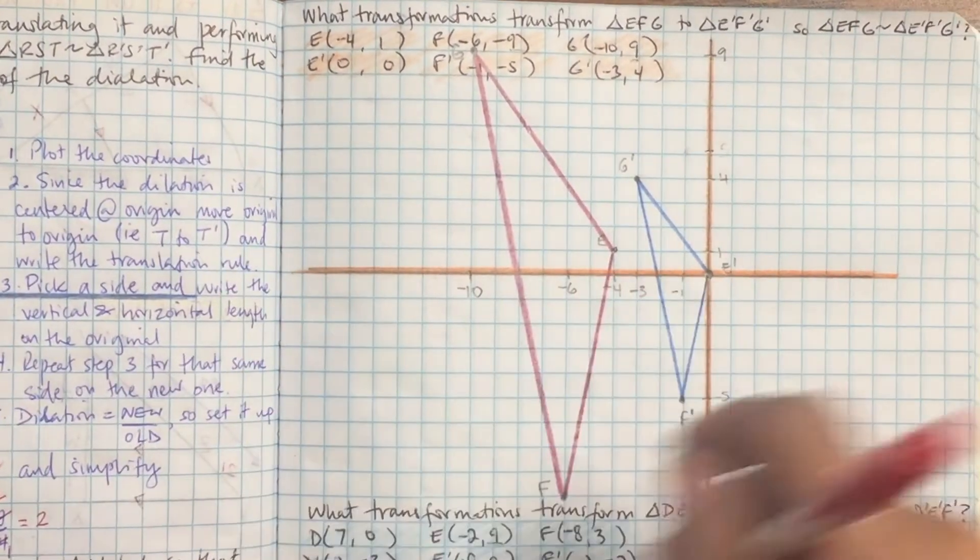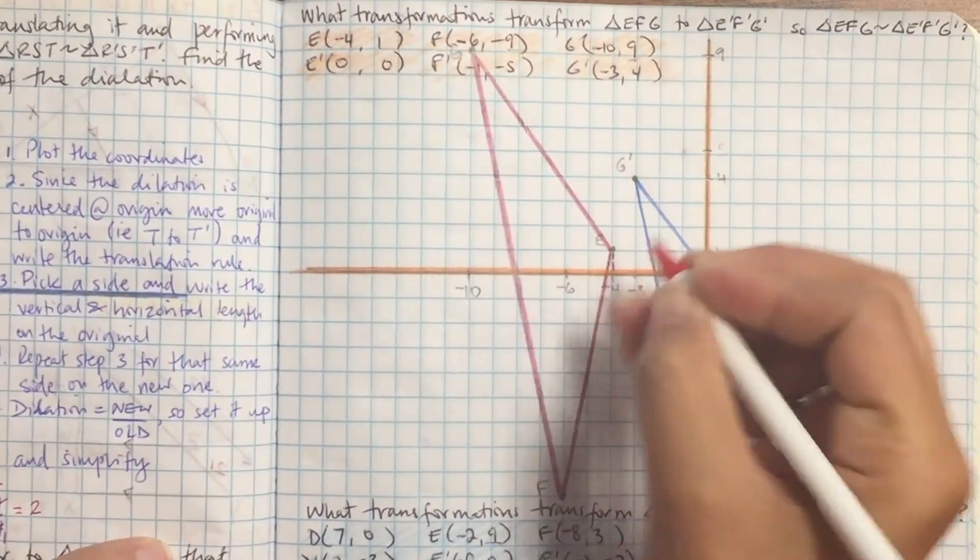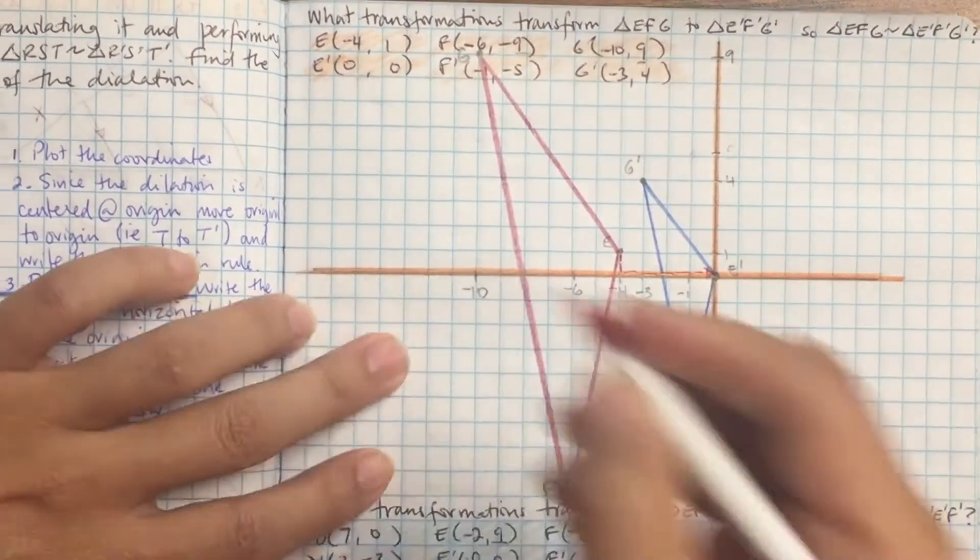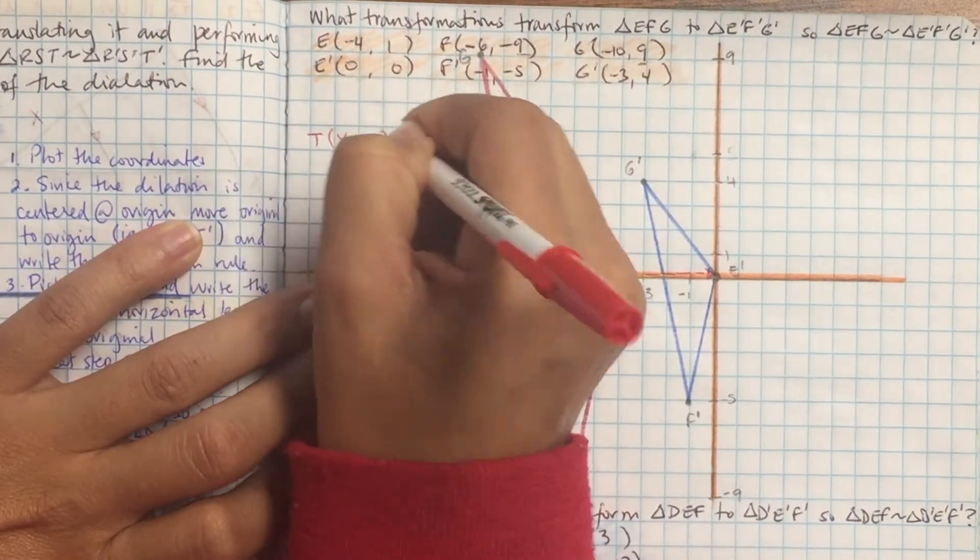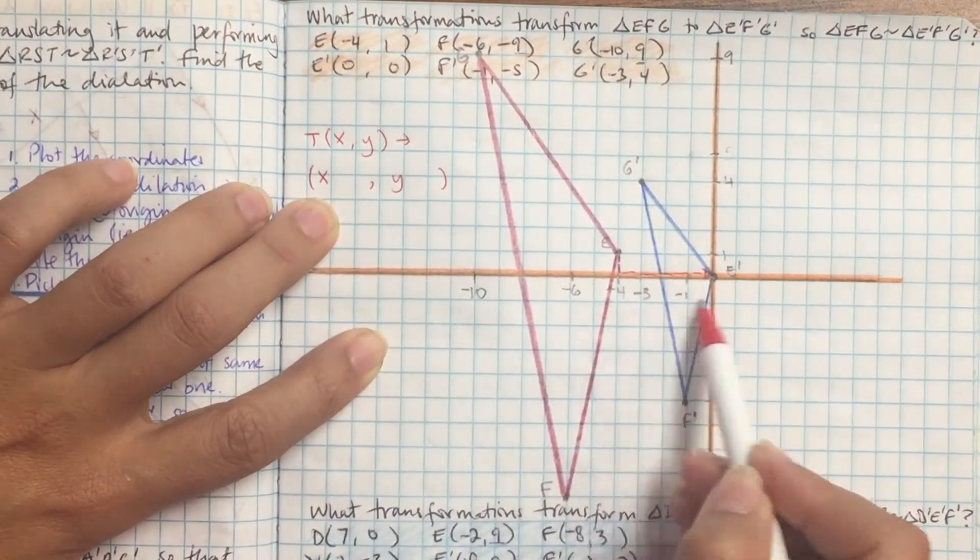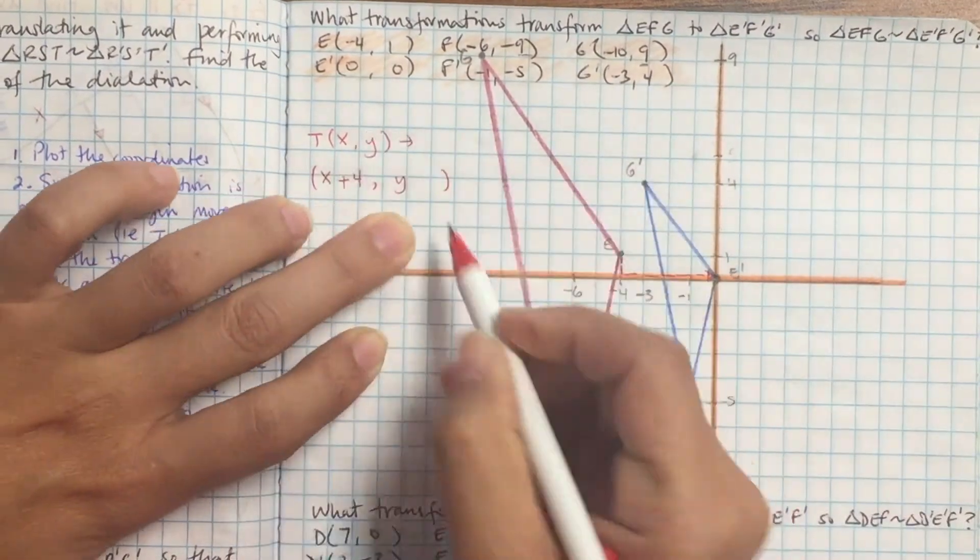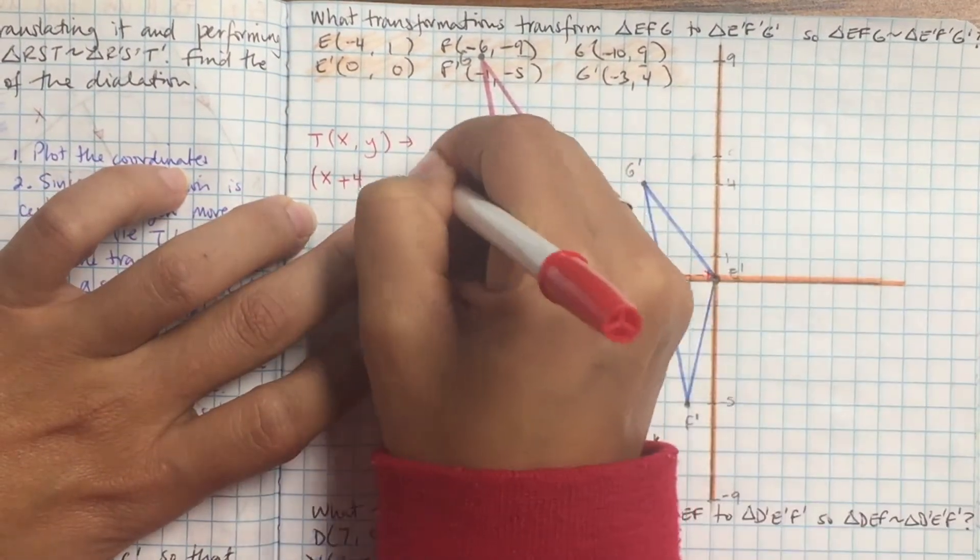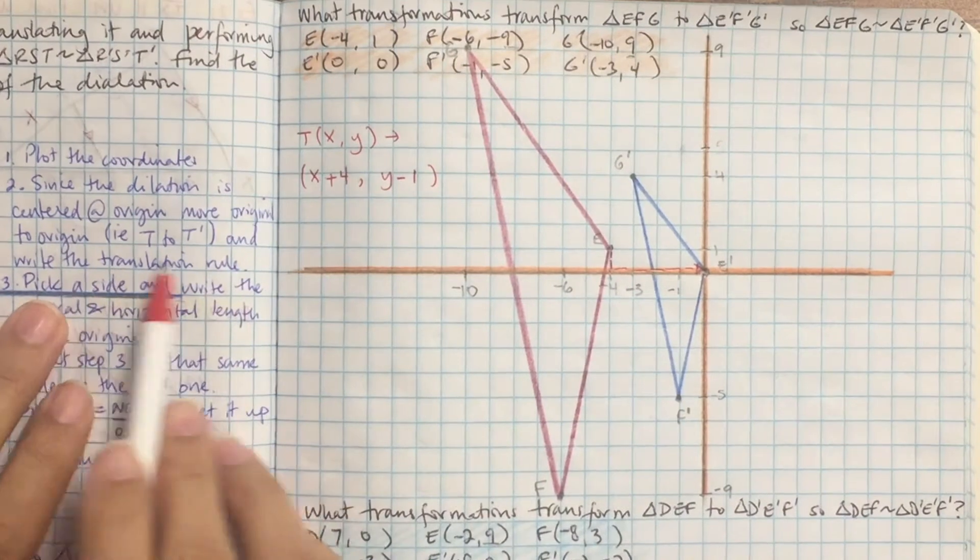Let's look at the translation first. How did I move from E to E prime? I'm going to go down 1 and right 4. So I'll write the rule down. X is, I went right, so that's going to be plus 4. And Y is, I went down 1, so that's going to be minus 1.